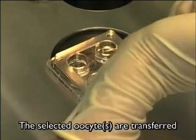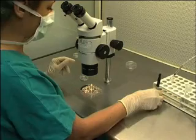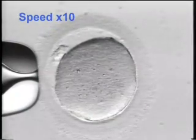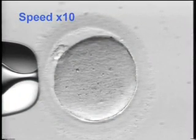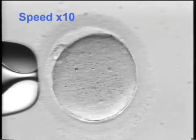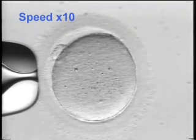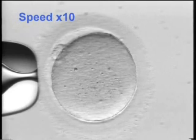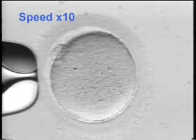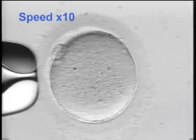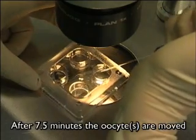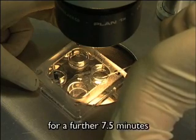The selected oocytes are transferred to freezing solution 1 for 7 and a half minutes. After 7 and a half minutes, the oocytes are moved by washing into freezing solution 2 for a further 7 and a half minutes.